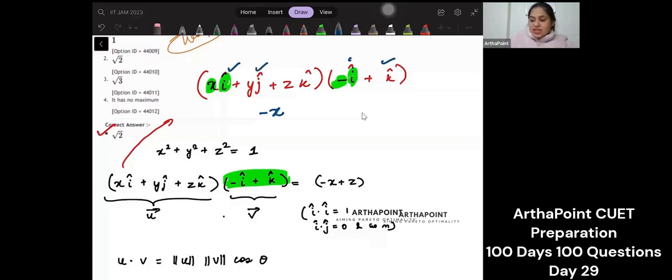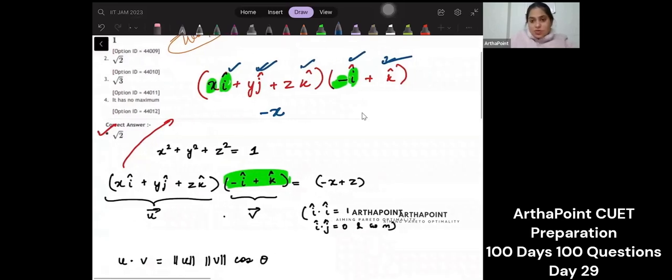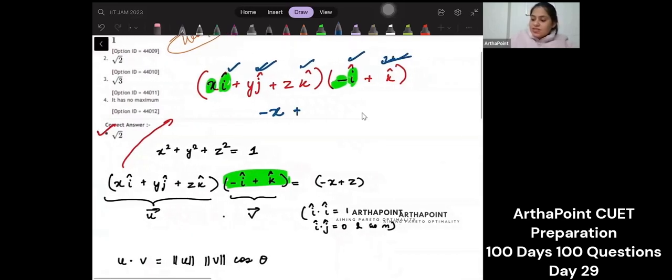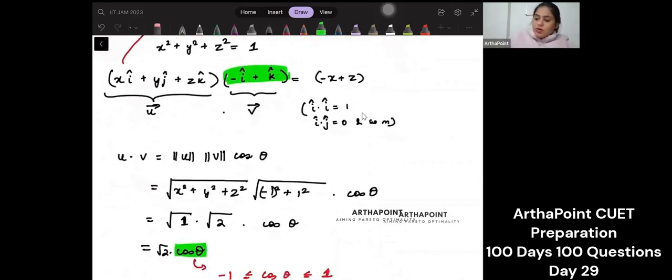j ka i ke saath will become 0. j ka k ke saath will become 0. k and i will become 0. And the last thing I will be left up with plus z and k dot k will become 1. So I will get minus x plus z. So when I do the dot product of this vector with this, I will get this vector.